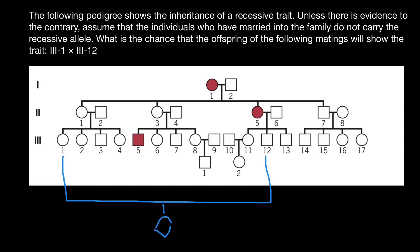Because this is a recessive trait, in order for person number one in the first generation to be affected, this person has to be homozygous recessive. What is the genotype of this person — the father? Because we see that one of the children, the daughter, is affected. She has to get two recessive alleles. From the mother's side she can get only one recessive allele, but the second recessive allele she got from the father's side. That means the father has to be capital A, small a. His phenotype is normal, but this person is a carrier.